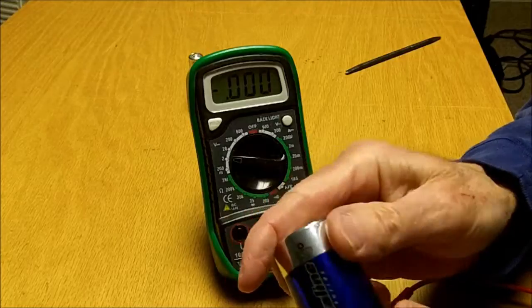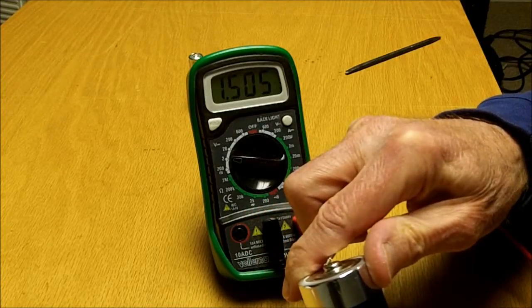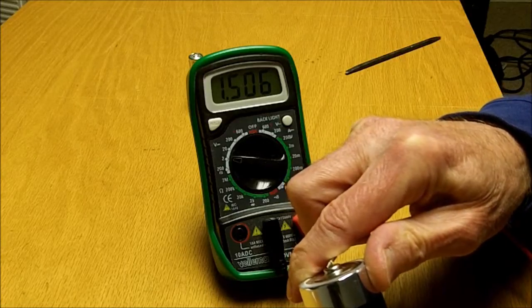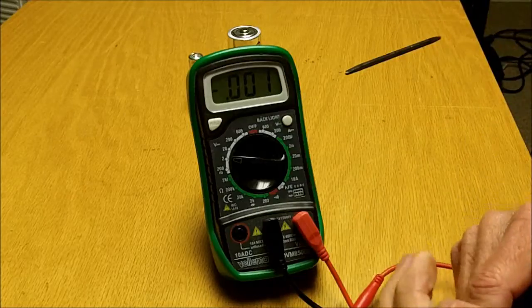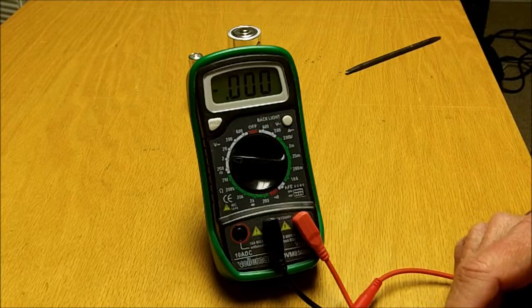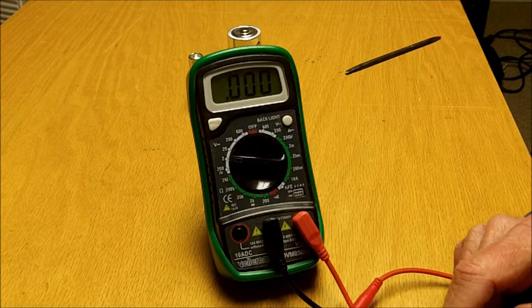It would normally, even though it's a 1.5, read something higher than 1.5 to be a good battery. I'm going to check another one here. That one reads 1.50 so that also is a good battery. One that would not be good would be one that reads anything less than 1.5.